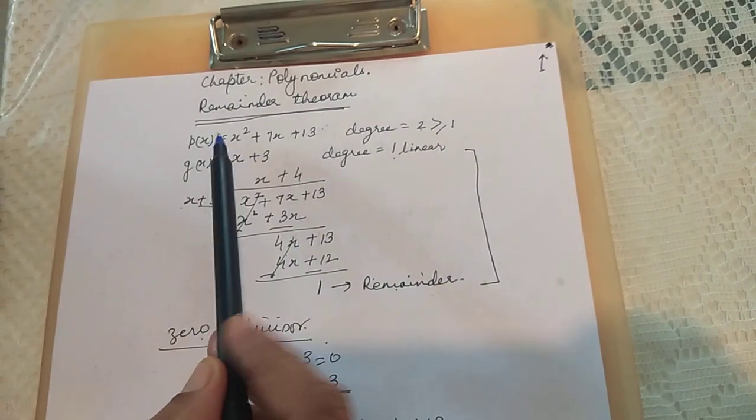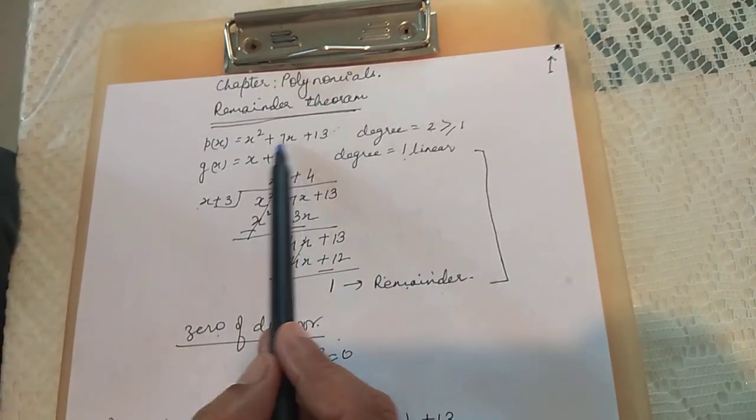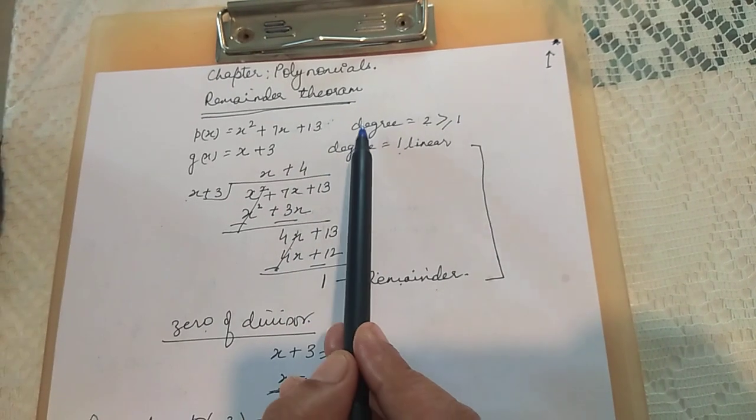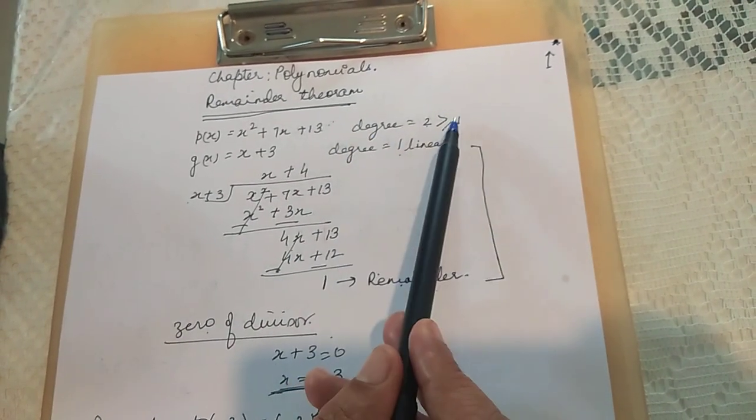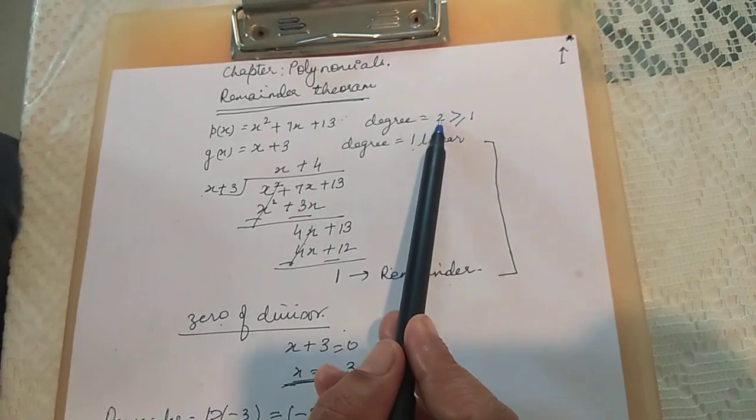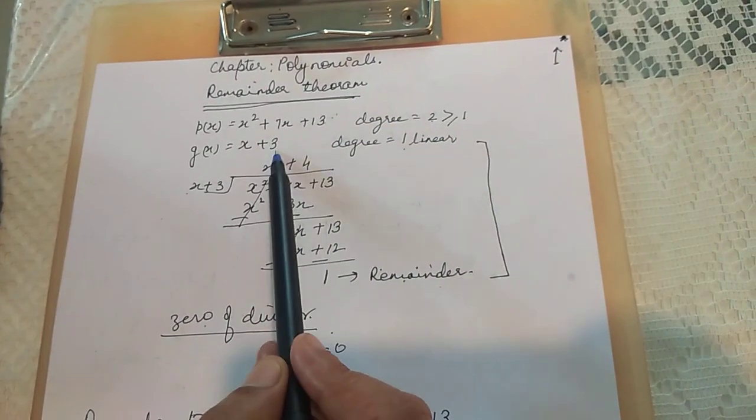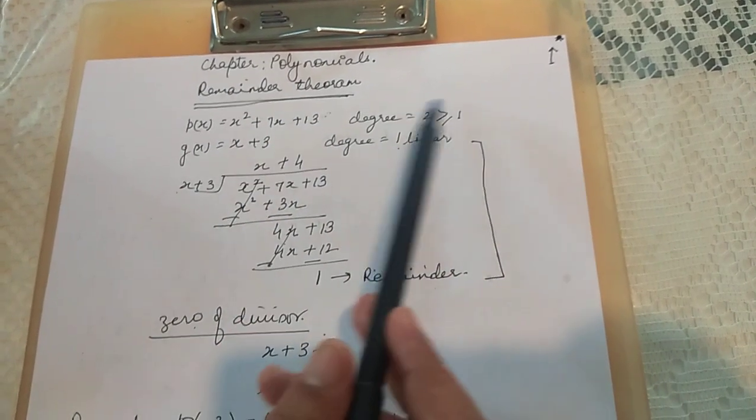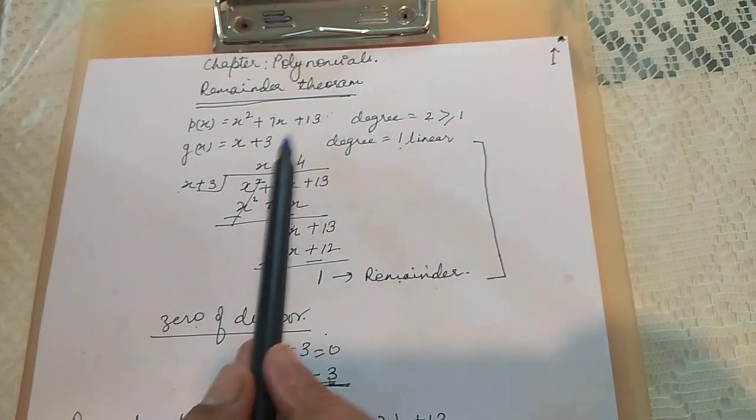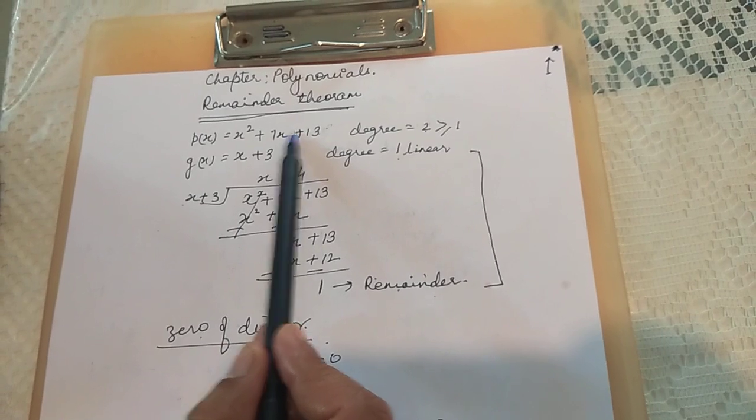Now if I take a polynomial p(x) that is x² + 7x + 13 whose degree is greater than 1. Here the degree is 2 which is greater than 1. This is our requirement of the remainder theorem that the degree of the polynomial should be greater than or equal to 1. Now degree you know is the highest power of the variable.